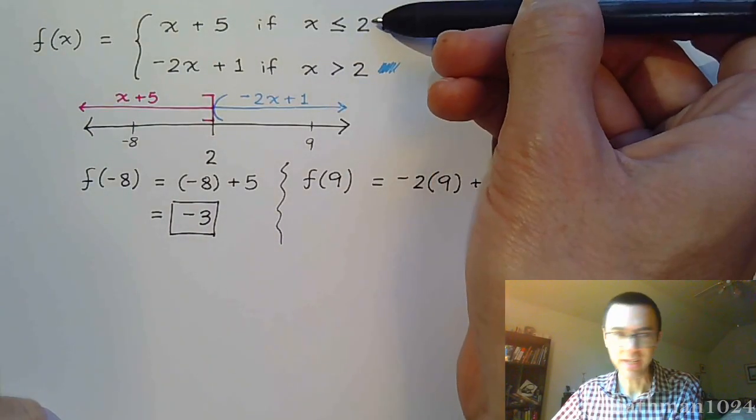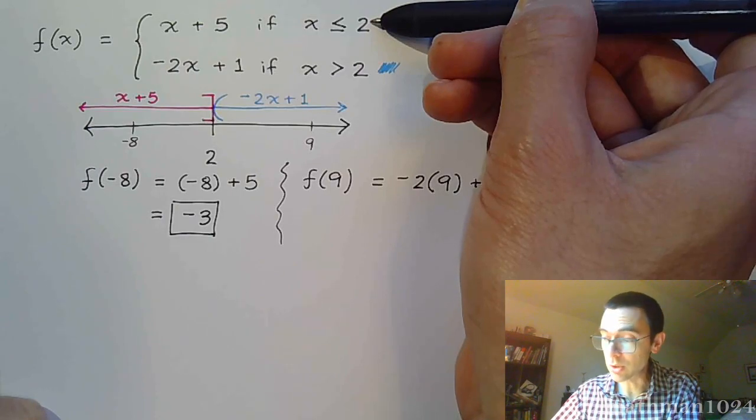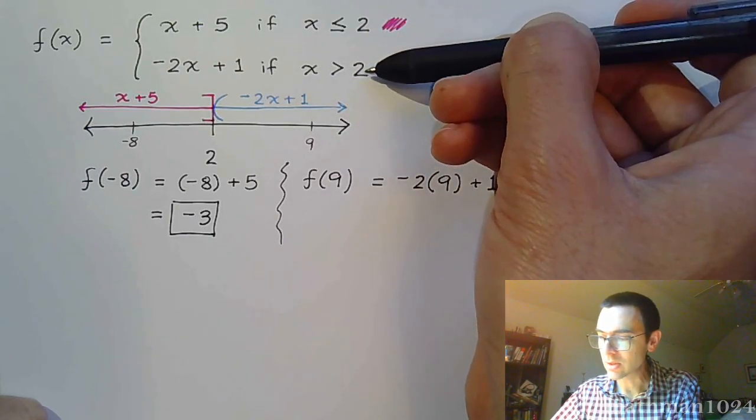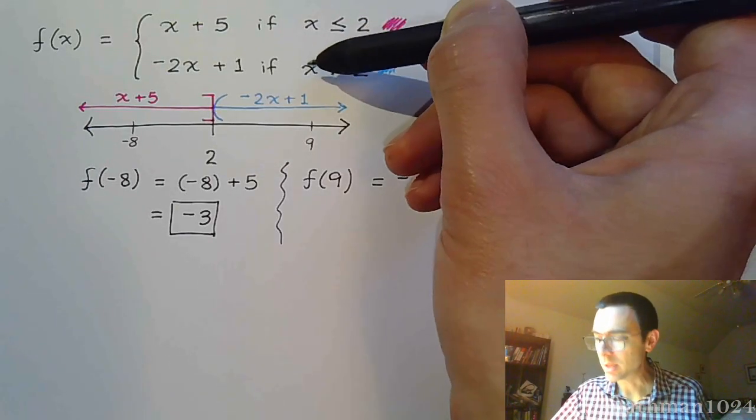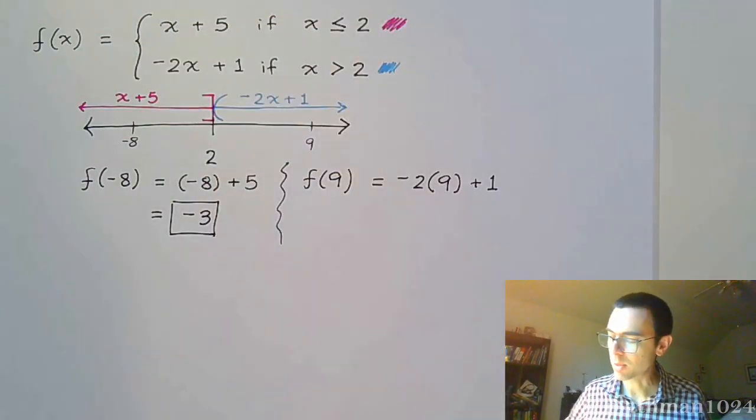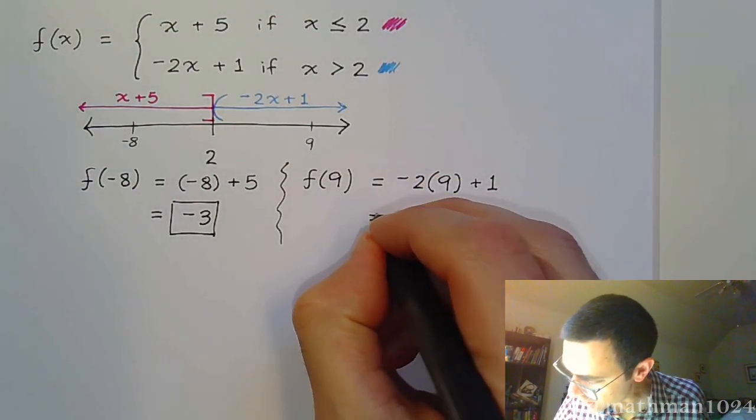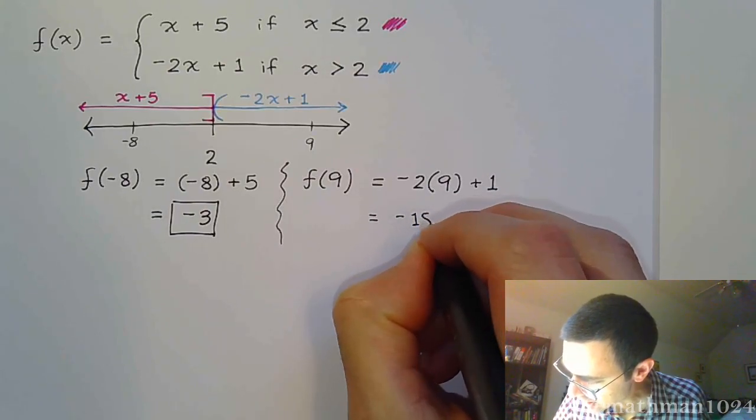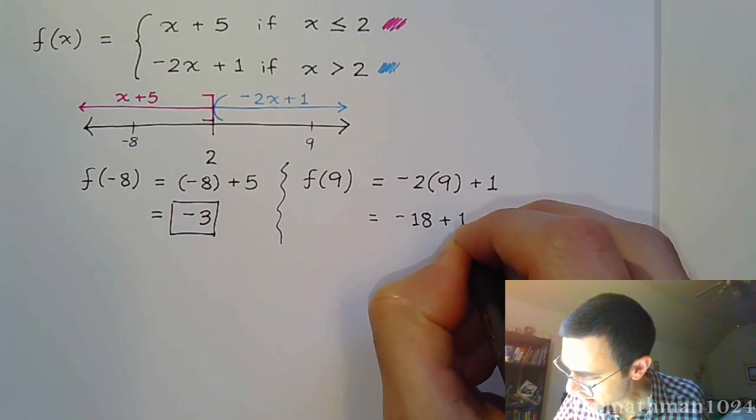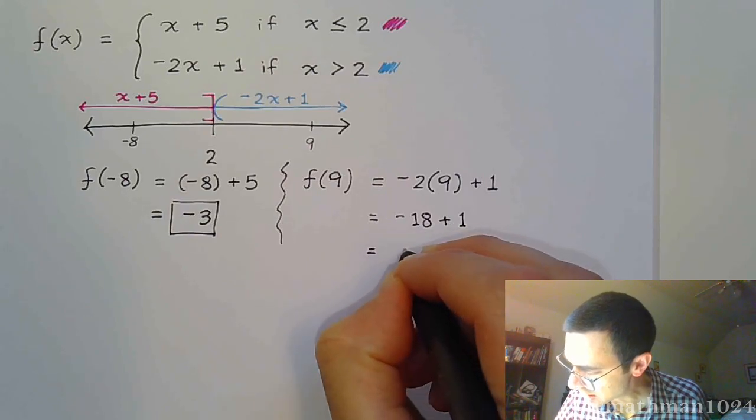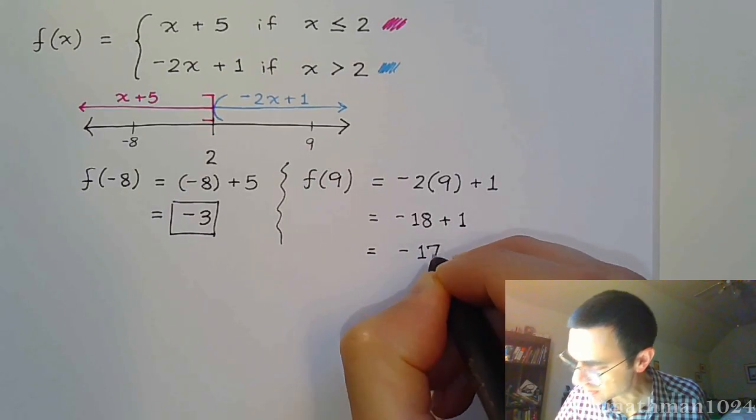Again, this is my input value. We figure out which one of these does it satisfy. 9 is not less than or equal to 2, but 9 is greater than 2, so it gets plugged into the second part right here. And then we just work this out. We get -18 + 1, and we get -17.